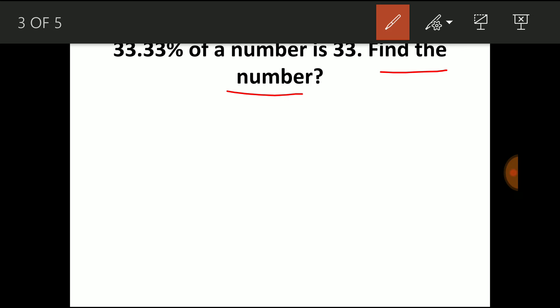So 33.33% equivalent fraction is 1/3. So if 1/3 is 33, you have to find 100% and the equivalent fraction is 1. So 1 equals x. Now cross multiply, you get x equals 99. So 99 is the original number.